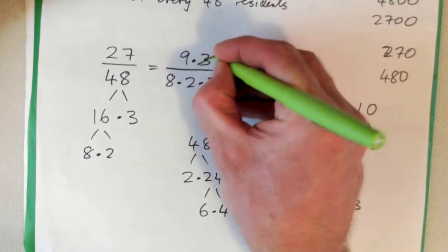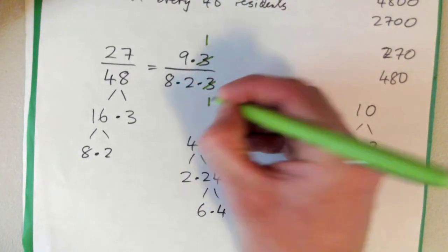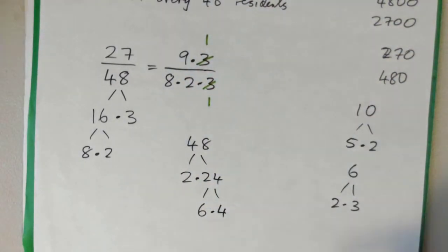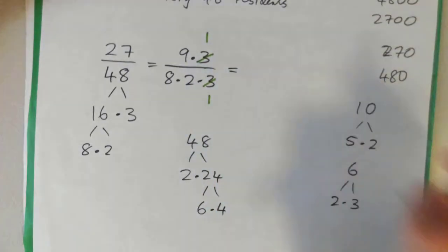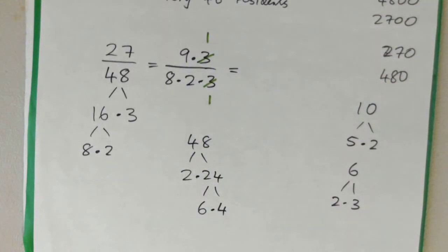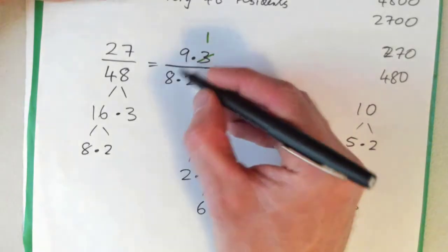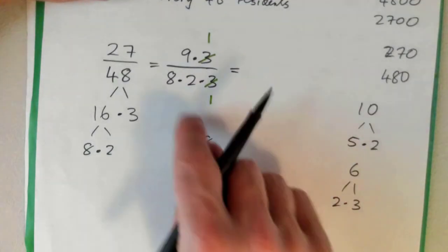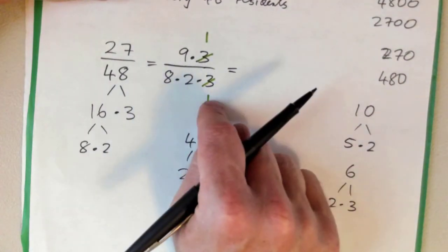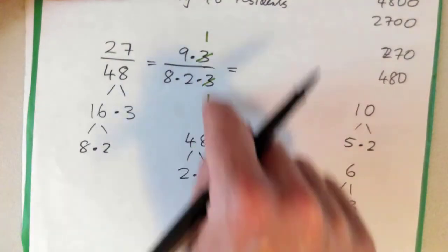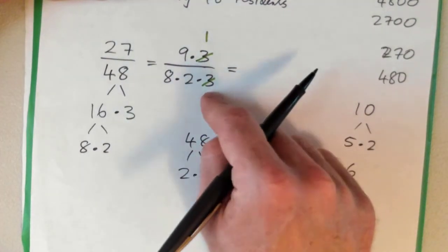So we can just go 3 into 3 goes once, 3 into 3 goes once, right? And does anything else cross cancel? So 9 does not go into 8 or 2. You can't cross cancel 8 and 2 because they're both on the bottom. You can only cross cancel factors on the top with factors on the bottom.